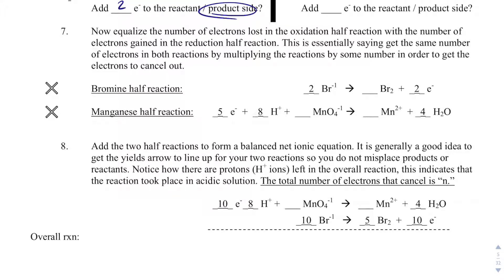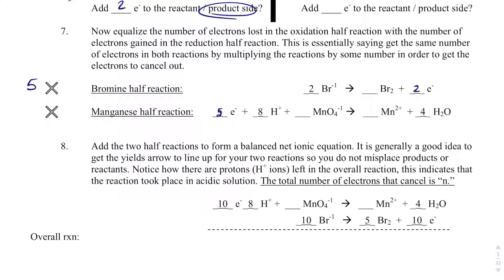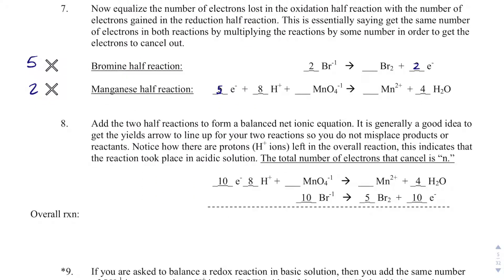Now I just need to add up these two reactions. I've kept my yield arrows on the same side so things line up properly — if arrows are on different sides it's easy to mix up which side species are on. The key rule is that electrons must cancel in the overall reaction. So I need to find the least common multiple of 5 and 2, which means I'll multiply the bromine reaction by 5 and the manganese reaction by 2.